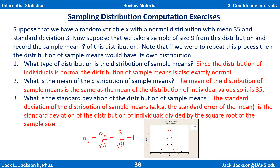So the standard deviation of the original distribution is 3, shown as the black (wider) curve. The red curve is the distribution of x-bar values, with the smaller standard deviation of 1. The black, shorter and wider curve is the distribution of individual values, while the taller, skinnier curve with more area near the mean is the distribution of sample means.